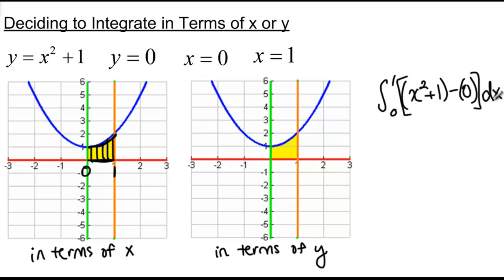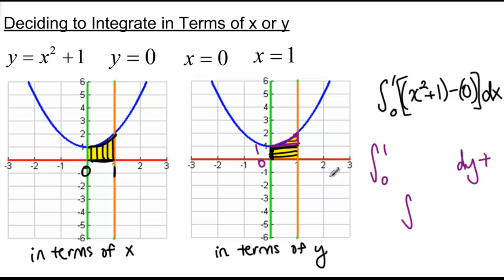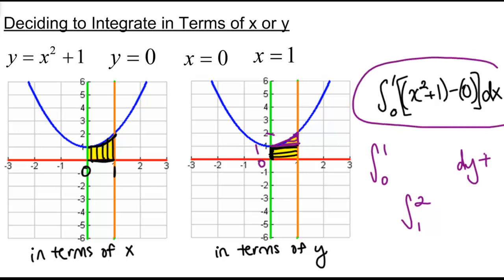Now, if we wanted to do the same region in terms of y, we would start out by drawing horizontal rectangles. But right here when we got to 1, we would have a problem because our leftmost function would change — instead of being the green line, it would suddenly be the blue line. So we would need two different integrals to do this in terms of y: one integral in y from 0 to 1, and another integral in y from 1 up to 2.